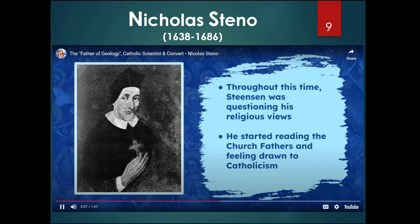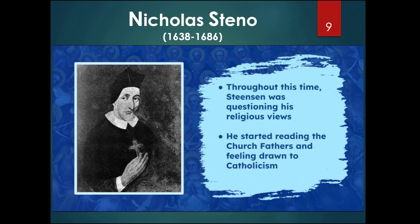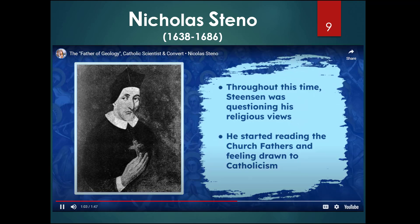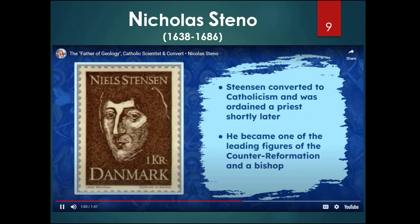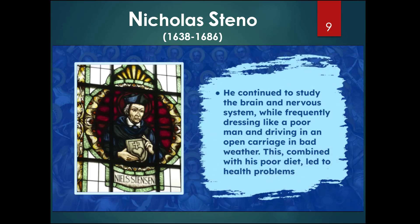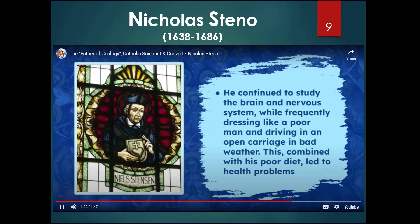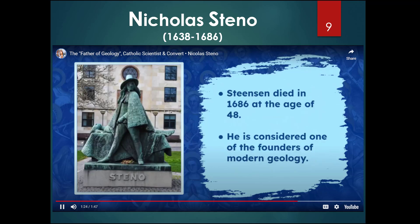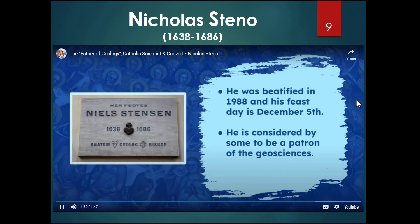In 1666, Steno began to question the nature of fossils after dissecting the head of a large female shark. The shark's teeth looked similar to objects found inside rocks, but he questioned how a solid object could end up inside another solid object. His studies culminated in his Dissertationis Prodromus of 1669, wherein he described the four principles of stratigraphy. Throughout this time, Steno was questioning his religious views, eventually converting to Catholicism and becoming ordained a priest and then a bishop, one of the leading figures of the Counter-Reformation. He died in 1686 at the age of 48. He is considered one of the founders of modern geology and was beatified in 1988.